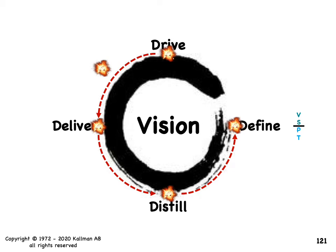Just like with the 4R model, you can use the 4D model in reverse. When you're doing your retrospective and your review, if what you delivered didn't match what the product owner and the stakeholders were looking for, then you're going to have to go back and look at the delivery and look at your distilled agreement. What did we agree to in the sprint backlog during sprint planning, and then ultimately go back and look at what were our definitions.